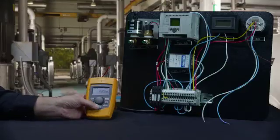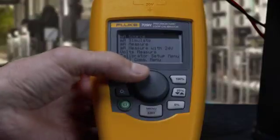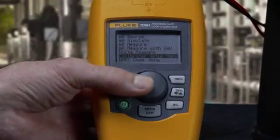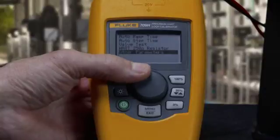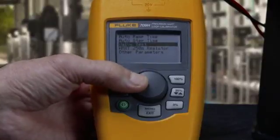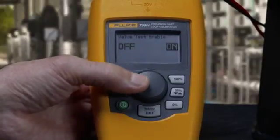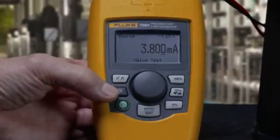The 709 and 709H also have a long list of great features users will appreciate, including valve step settings in milliamp source mode, adjustable automatic ramp, and 25% stepping of the output.